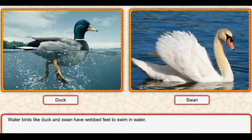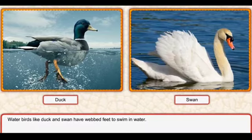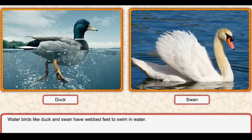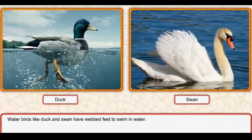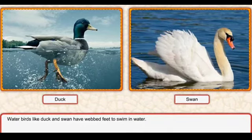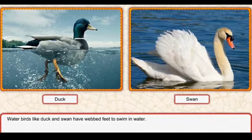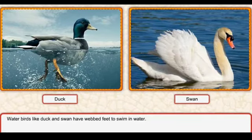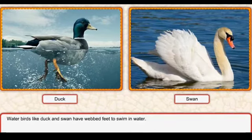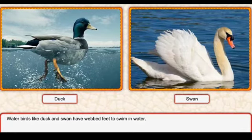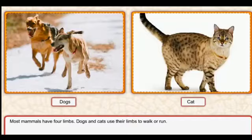Water birds like the duck and swan have webbed feet to swim in water. Duck aur swan ke paas webbed feet hain paani mein swim karne ke liye, tairne ke liye.